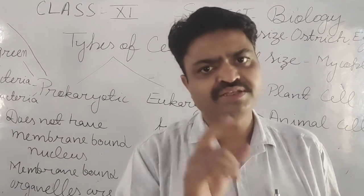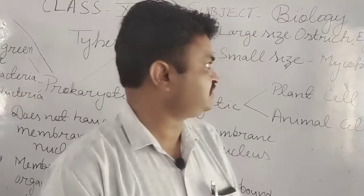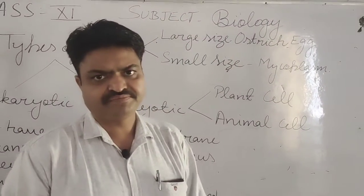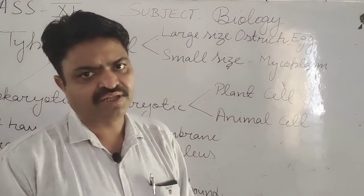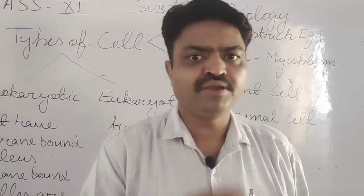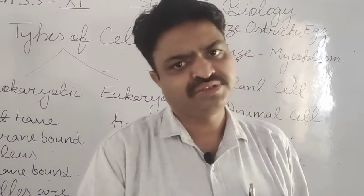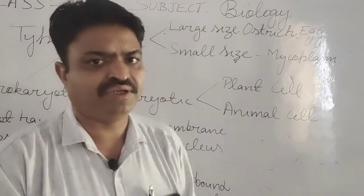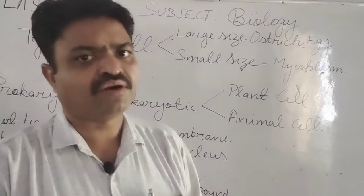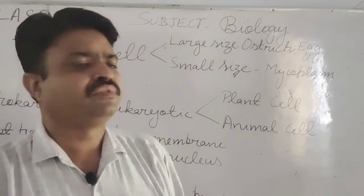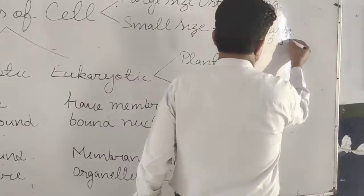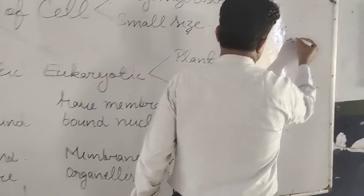For example, there is a cell with a very small size — the name of that living organism is mycoplasm. Mycoplasm is a particular type of bacteria that has a very small size. According to size, its length is 0.3 micrometer.